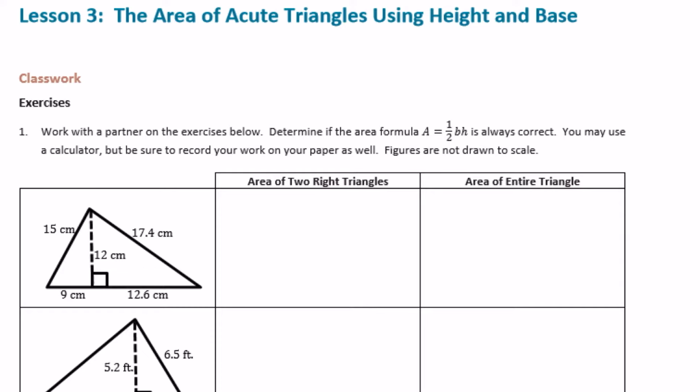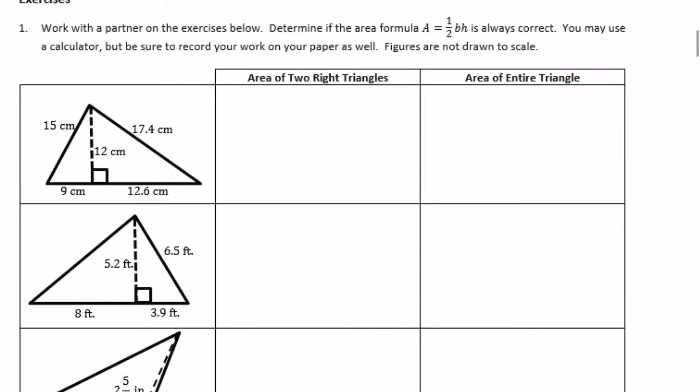Sixth grade module five, lesson three classwork exercises. Work with a partner to determine if the area formula — area equals one-half base times height — is always correct. You may use a calculator, but be sure to record your work on your paper as well. Figures are not drawn to scale.